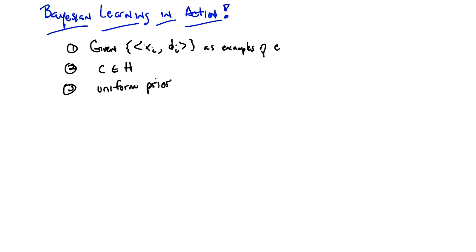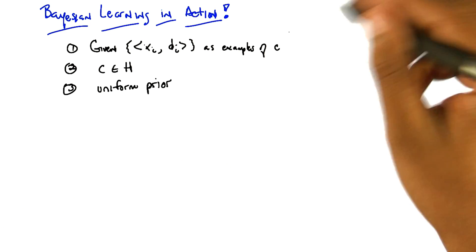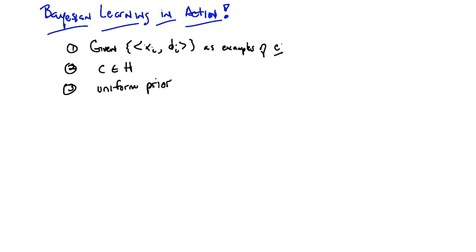So this is machine learning, so we're going to be given a bunch of data. There are three assumptions I'm going to make here. The first is that we're going to be given a bunch of labeled training data, which I'm writing here as x sub i and d sub i. So x sub i is whatever the input space is, and d sub i are these labels. It doesn't actually even matter what the labels are, but let's say that the labels are classification labels. Furthermore, not only are we given this data as examples drawn from some underlying concept C, but they're in fact noise free.